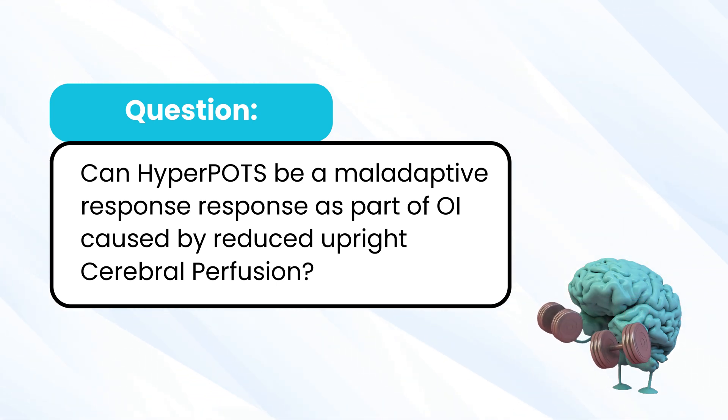Can hyperadrenergic POTS be a maladaptive response as part of orthostatic intolerance caused by reduced upright cerebral perfusion? This is flipping the question around — if the neurological structures in charge of inhibiting sympathetic output are the brakes, and we pull the brakes away, it's all gas. But what happens if we're hypoperfused and not able to apply the brakes, then we get that hyperadrenergic activity as well? Ischemia — a reduction in blood flow, acute or chronic — can cause this. In the moments where we're ischemic, your brain is going to act like it's having a stroke.